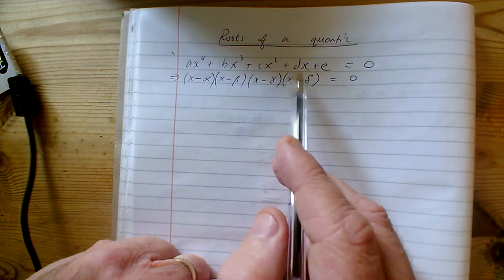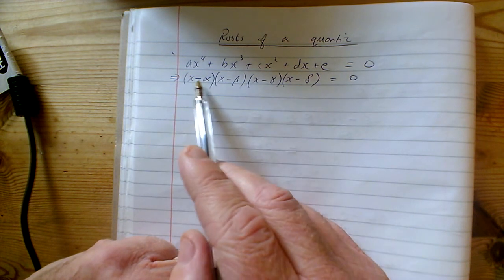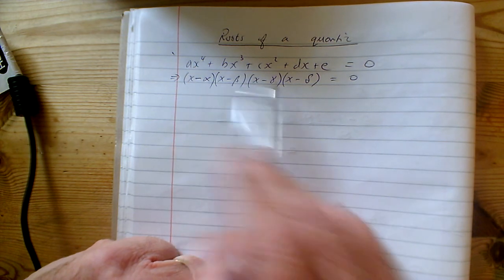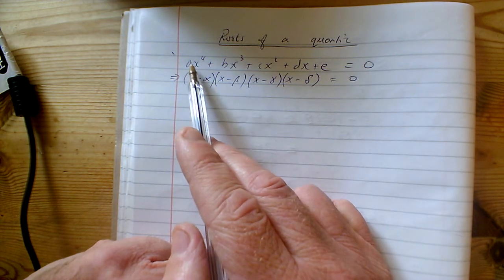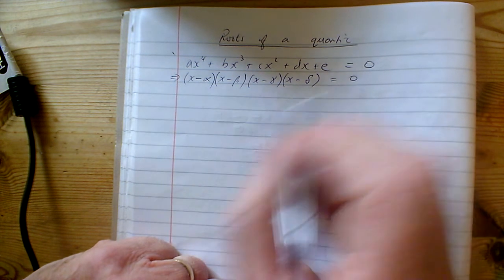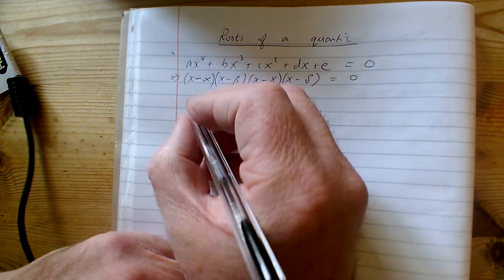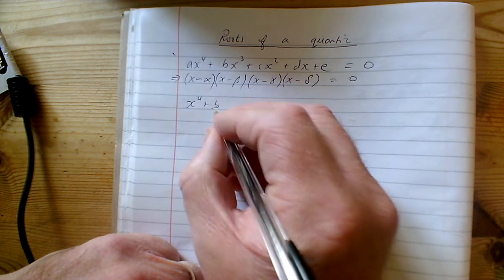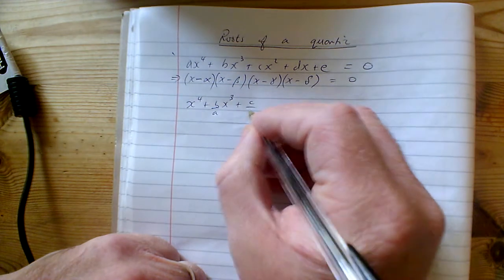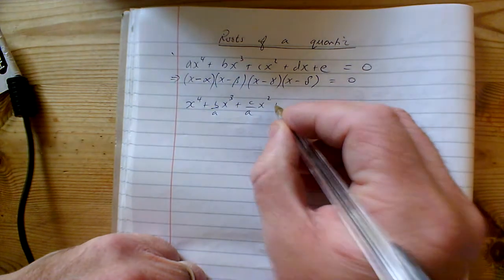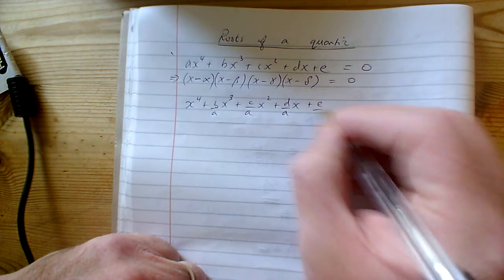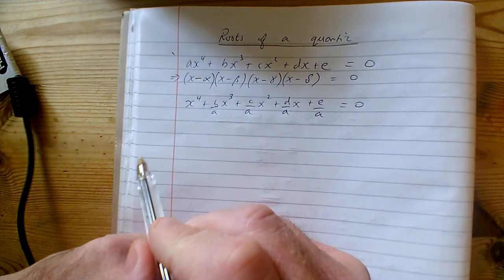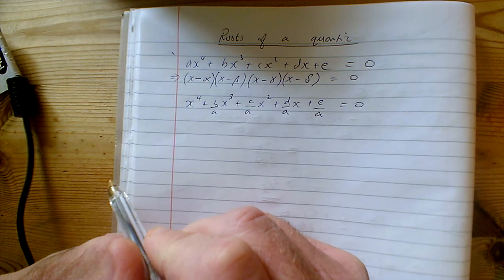Now we want to find the relationship between the roots of the equation and the coefficients. If I multiply this out, the coefficient of x to the 4 would be 1. So I'm going to rewrite this equation by dividing through by a, so that we can match off the coefficients. Dividing through by a gives me x to the 4 plus b over a times x cubed plus c over a times x squared plus d over a times x plus e over a.